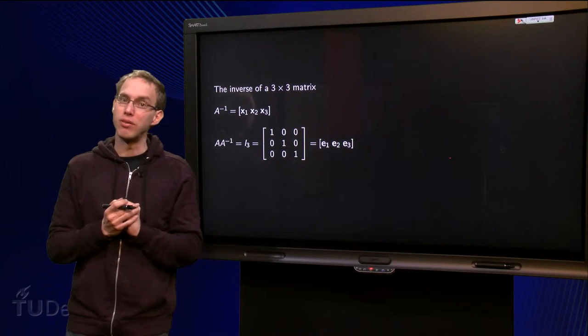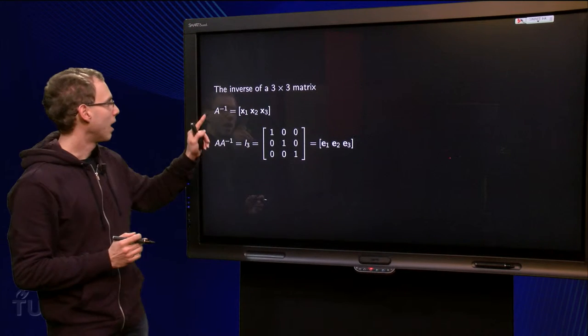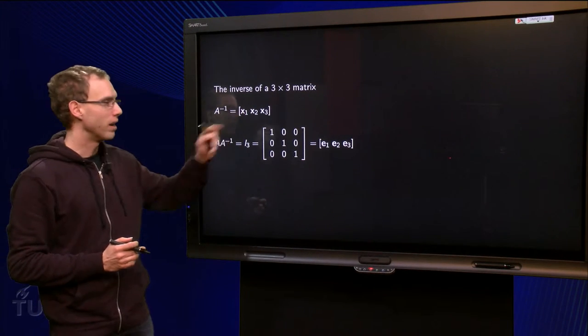So we know our A inverse will consist of 3 columns, let's call them x1, x2 and x3.